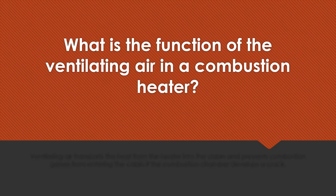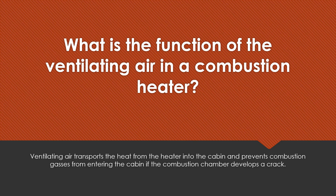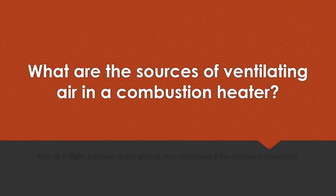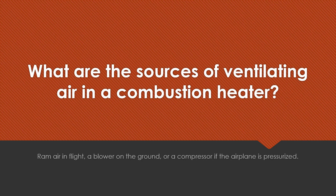What is the function of the ventilating air in a combustion heater? Ventilating air transports the heat from the heater into the cabin and prevents combustion gases from entering the cabin if the combustion chamber were to develop a crack. What are the sources of ventilating air in a combustion heater? Ram air in flight, a blower on the ground, or a compressor if the airplane is pressurized.